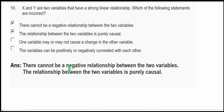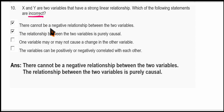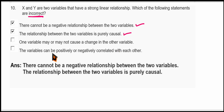Question ten: X and Y are two variables with a strong linear relationship. Which of the following statements are incorrect? The statement 'there cannot be a negative relationship between the two variables' is incorrect, because there may be a negative relationship. The statement 'the relationship is purely causal' is also incorrect, because one variable may or may not cause change in the other. The statement 'variables can be positively or negatively correlated' is correct. So the incorrect statements are the first two options.